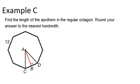In example C, it says find the length of the apothem in the regular octagon. Round your answer to the nearest hundredth. So the apothem is this red line right here, and it's the height of this triangle.